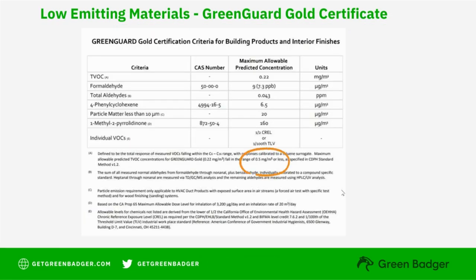The next section has to do with the range of total VOCs. In this example, it's 0.5 or less. There's really no right or wrong number for the range, but you do need a document that shows what the range is.